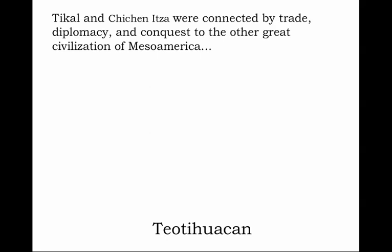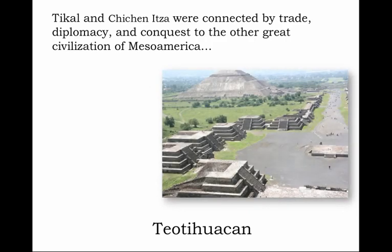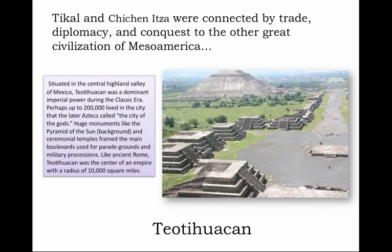Tikal and Chichen Itza were connected by trade, diplomacy, and conquest to the other great civilization of Mesoamerica — the non-Mayan civilization farther north in Mexico known as Teotihuacan. Situated in the central highland valley of Mexico, Teotihuacan was a dominant imperial power during the classical era. Perhaps up to 200,000 people lived in the city that the later Aztecs called the City of the Gods — the Ciudad de los Dioses. Huge monuments like the Pyramid of the Sun and ceremonial temples framed the main boulevards used for parade grounds and military processions. Like ancient Rome, Teotihuacan was the center of an empire with a radius of some 10,000 square miles.